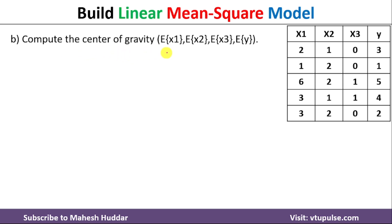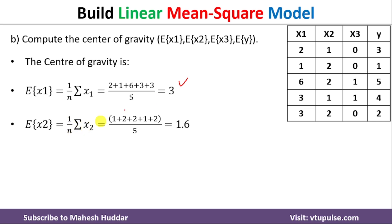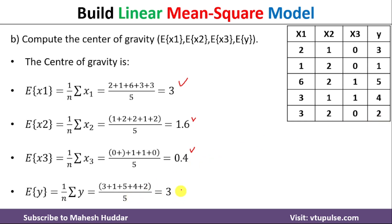Coming to the second question, we need to calculate E of x1, E of x2, E of x3, and E of y. E of x1 equals 1 over n times the summation of x1. Here n is equal to 5. Summing all x1 values — 2 plus 1 plus 6 plus 3 plus 3 — and dividing by 5 gives E of x1 equal to 3. Similarly, E of x2 equals the sum of all x2 values divided by 5, which is 1.6. E of x3 equals the sum of all x3 values divided by 5, which is 0.4. And E of y equals the sum of all y values divided by 5, which is 3.